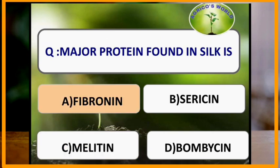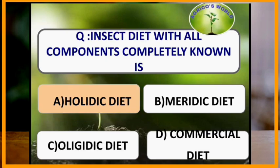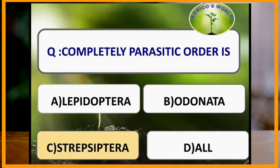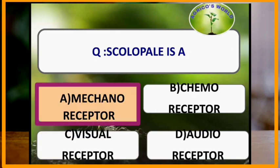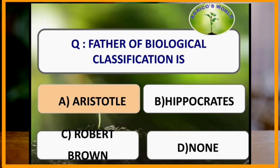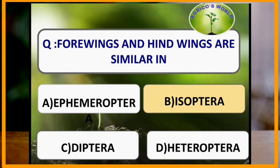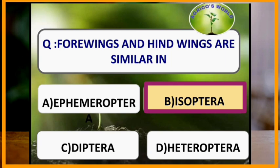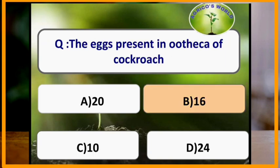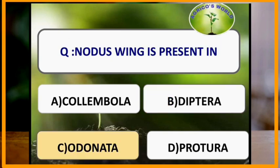The major protein found in silk is fibroin. An insect diet with all components completely defined is known as a holidic diet. Completely parasitic order is Strepsiptera. Scolopale is a mechanoreceptor. The father of biological classification is Aristotle. In Isoptera, all four wings and hind wings are similar. The eggs present in the ootheca of cockroach number 16.